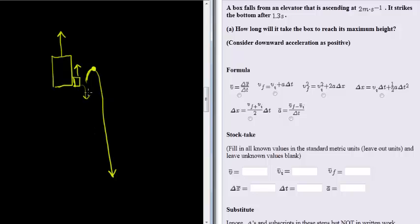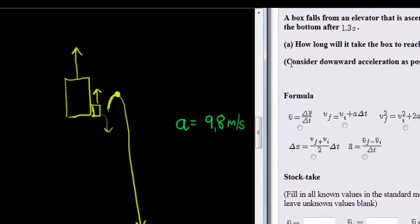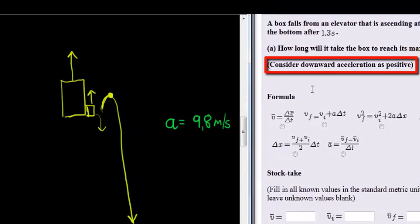So what do we know about this question? That's the first thing we always ask: what do we know? Well, of course we know that constant acceleration is 9.8 meters per second squared. And since downward acceleration is positive, this will stay positive.